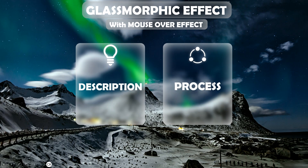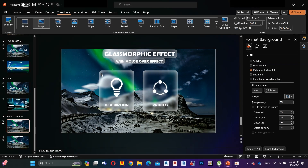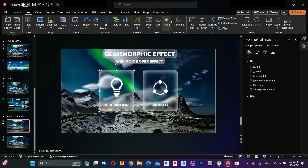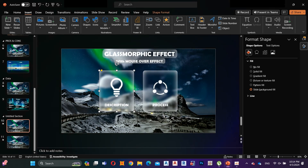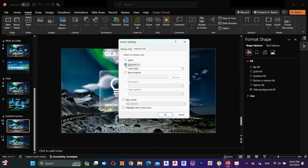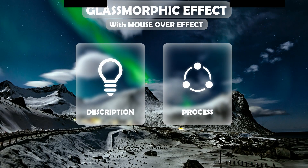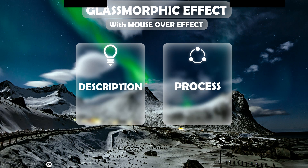Now let's fix it to work with the mouse. Select the first shape, click on Insert, select Action, and click on Mouse Over. Then select Hyperlink To, select the next slide, and click OK. Do the same thing for the next shape. Now you can see that once the mouse goes over the shape, it changes to the next slide.